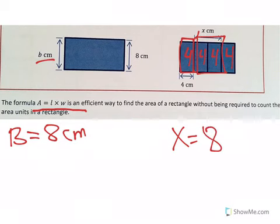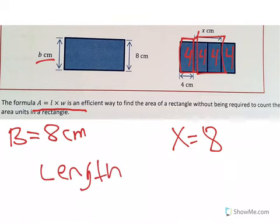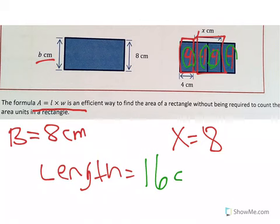And so if X is two of them, then X would also represent eight, right? And so then, what is the length of the rectangle? Well, if we have four, four, four, and four, four plus four plus four plus four, or four times four, you would have the length would be 16 centimeters.